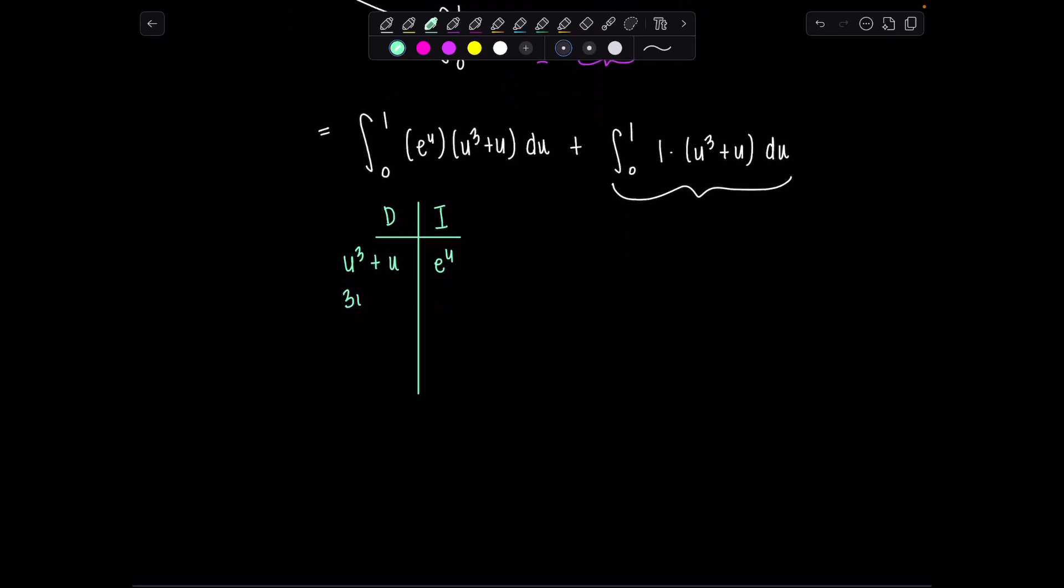So let's go. This will be 3u² + 1, then 6u, then 6, and zero. And then I'm just going to keep integrating e^u and we get e^u. How cute.